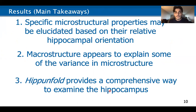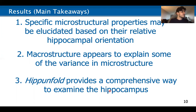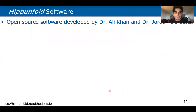The main takeaways are that specific microstructural properties may be elucidated based on their relative hippocampal orientation. Furthermore, macrostructure does appear to explain some variance in microstructure, and they appear to be correlated. Finally, HipUnfold provides a comprehensive way to examine the hippocampus. With the remaining time, I want to go through a quick run-through of the HipUnfold software.